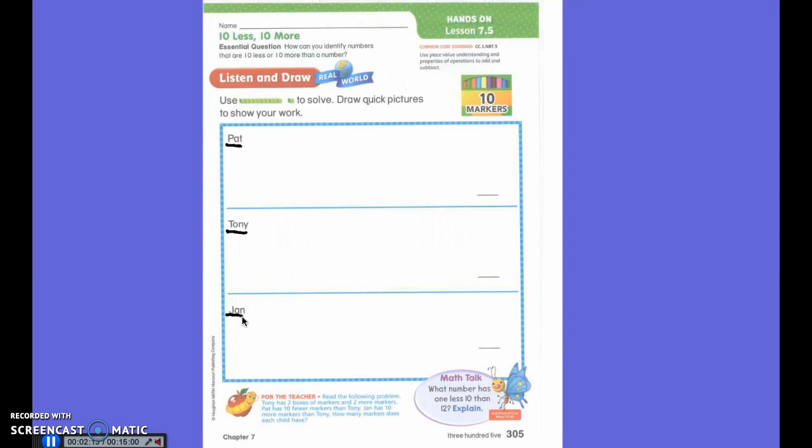So I want you to get out your top colorful page. And on Tony, I want you to do a quick draw. Tony has two boxes of markers. And how many is in each box? Ten. And how do I draw ten? Two quick lines. Two quick lines, a quick draw. Very good.